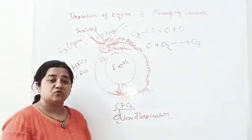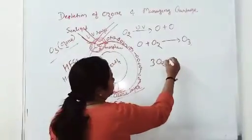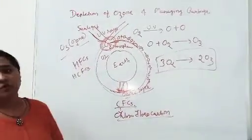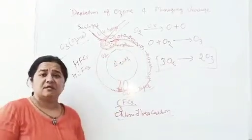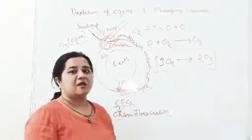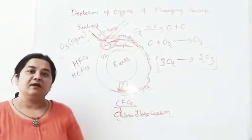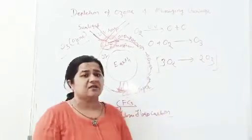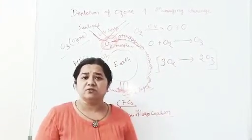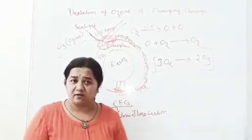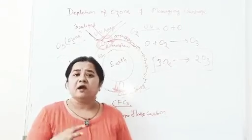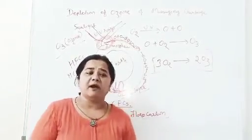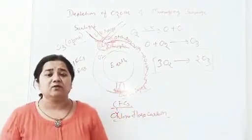3 molecules of oxygen मिलके बनाते हैं 2 molecules of O3 — that is depletion of ozone. Next topic is managing garbage. Garbage मतलब waste — कोई न कोई waste। हमने आगे भी lesson में देखा है types of waste: biodegradable और non-biodegradable। अब हम देखेंगे कि biodegradable और non-biodegradable को कैसे manage करना है — waste को reuse करो, reduce करो, recycle करो। काफी papers हम recycling करते हैं nowadays, plastic पे ban आ चुका है।